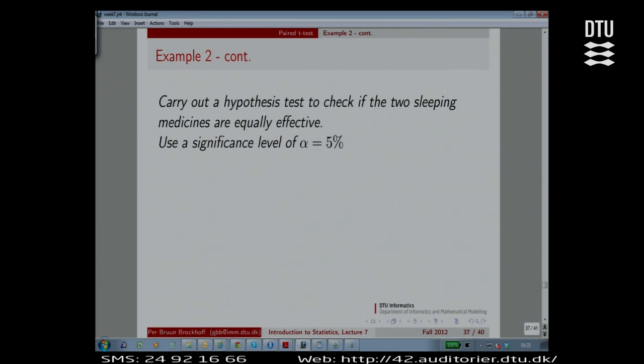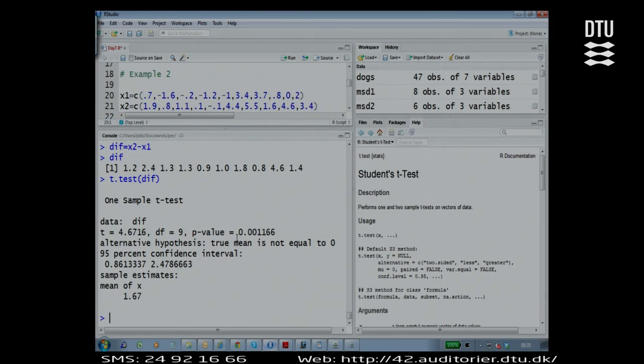So the result. I reject. And what do I reject? I reject that mu d is zero. So B is better than A, because that's what I can see in the numbers. That was based on my very small p-value here.